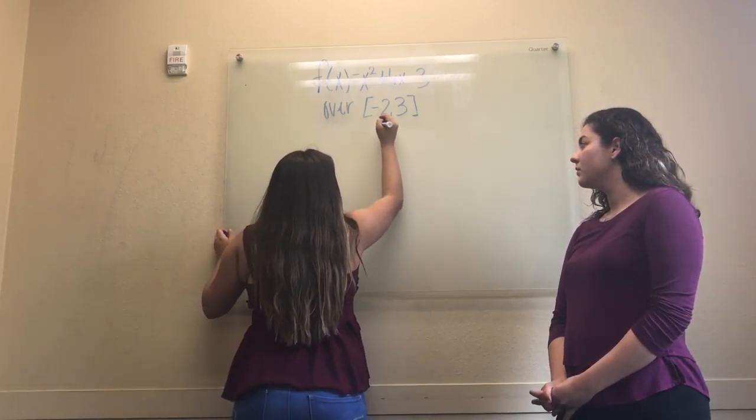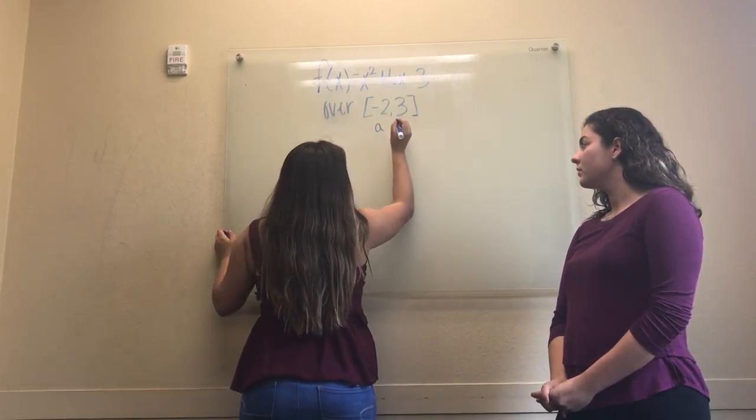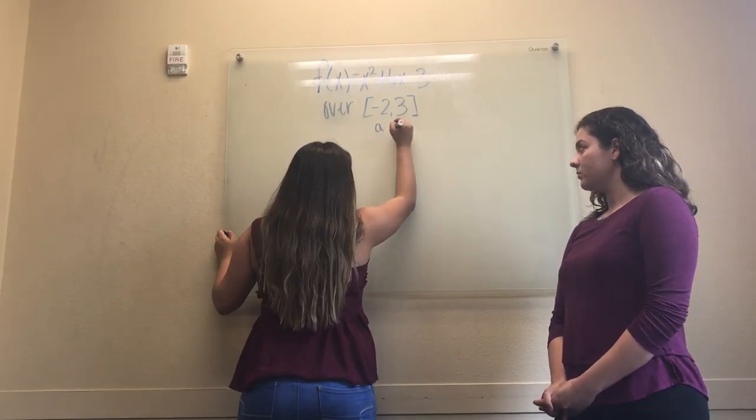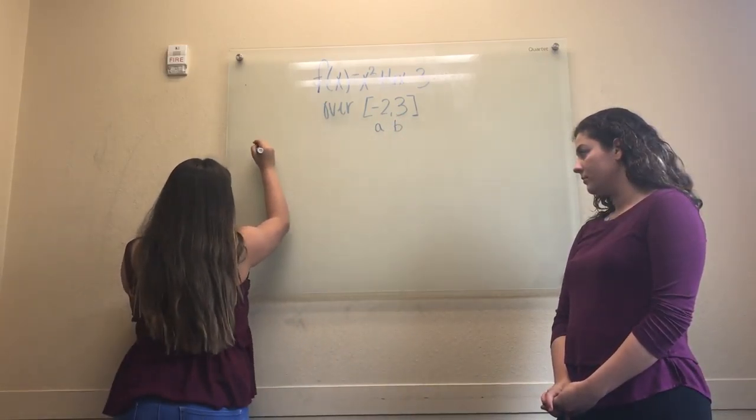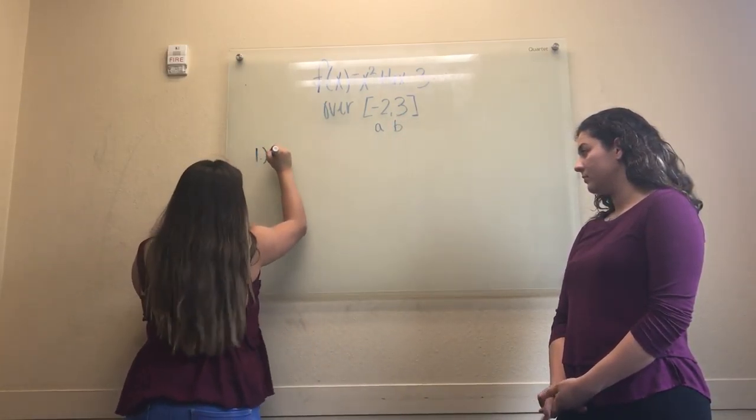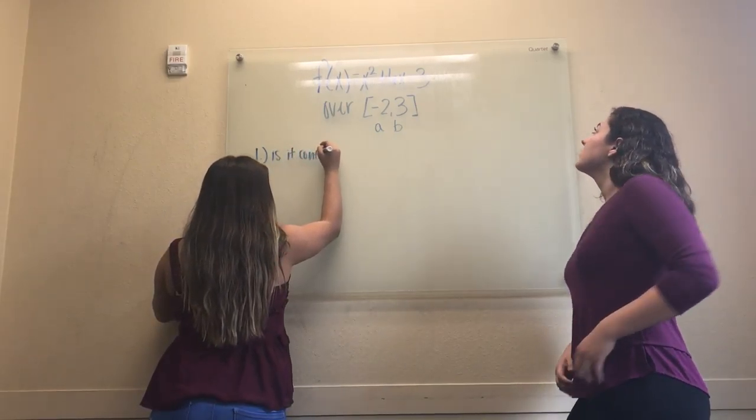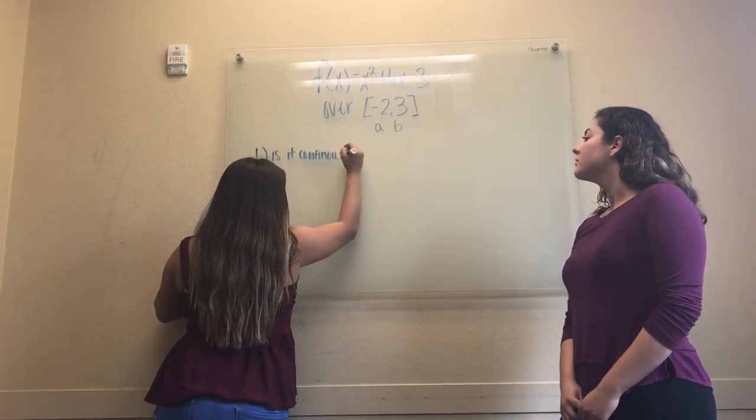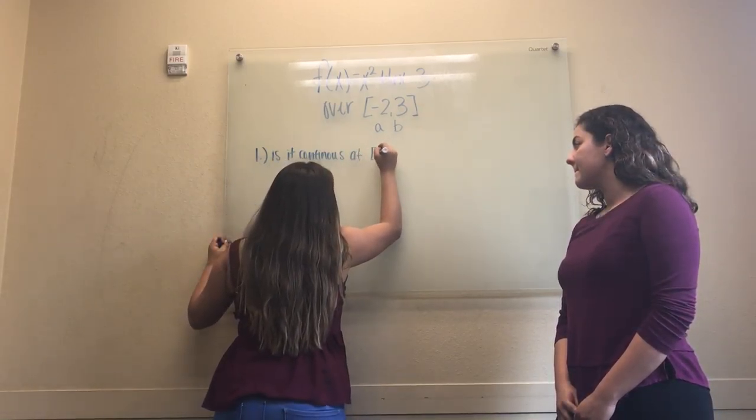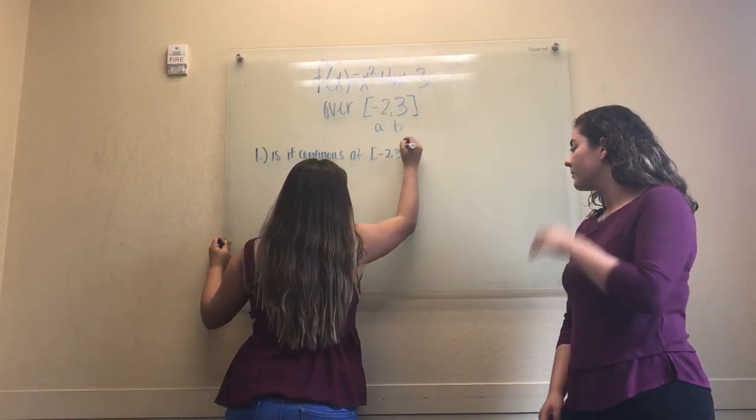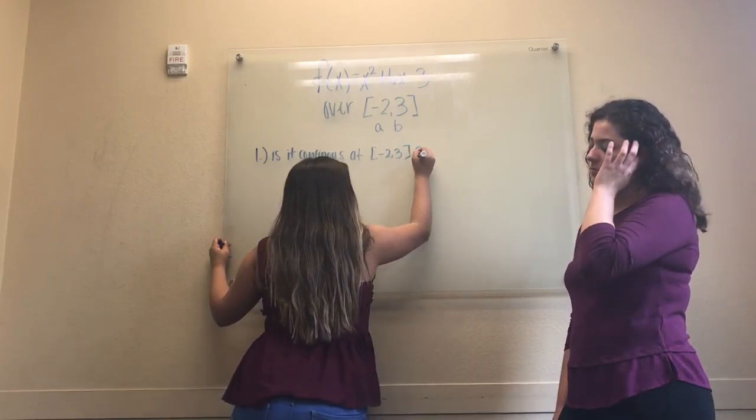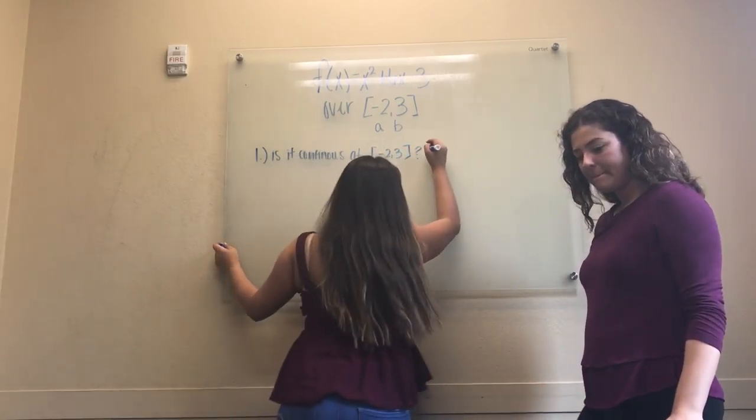In our case, f of a is negative 2 and f of b is 3. So as I said before, our first condition is, is it continuous at negative 2, 3? In our case, yes it is.